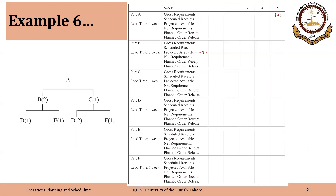As there are no requirements for the first four weeks, the net requirements for all weeks before week 4 are zero. In week 5 we have requirements of 100 and the lead time is one week, so planned order receipt will be 100 and planned order release will also be 100. The gross requirement for the parent A comes from MPS, and the gross requirement for the components B, C, D, E, and F comes from planned order release of their parent.